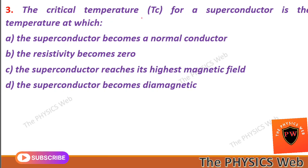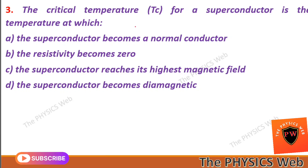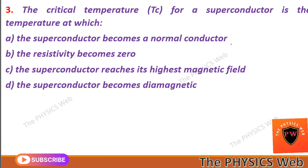Next, question three: the critical temperature for a superconductor is the temperature at which the superconductor becomes a normal conductor. So A is your correct option.